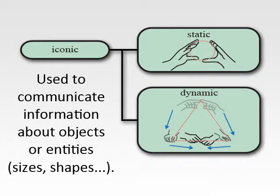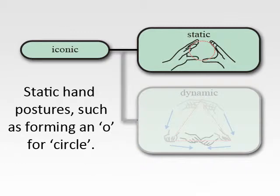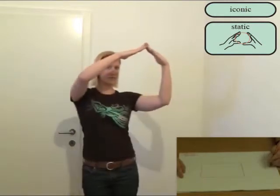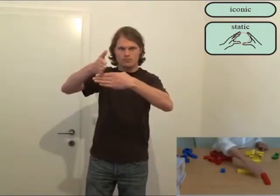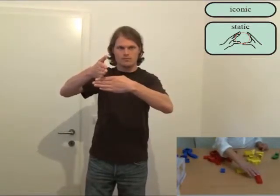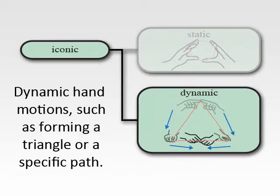Iconic gestures are used to communicate information about objects or entities, such as size or shapes. In iconic static gestures, this is done by static hand postures, like showing the shapes, sizes, or spatial relationships of objects. Iconic dynamic gestures use hand movements, for example by drawing shapes and paths into mid-air.